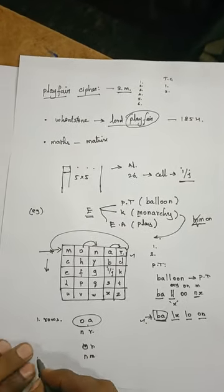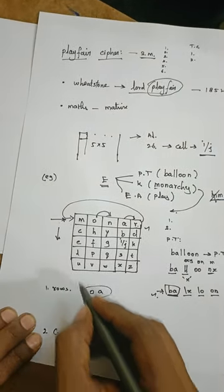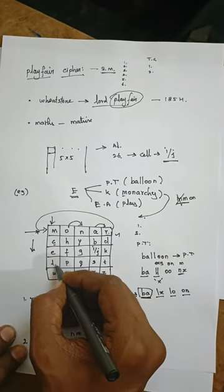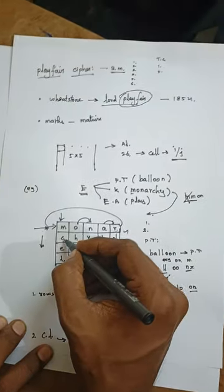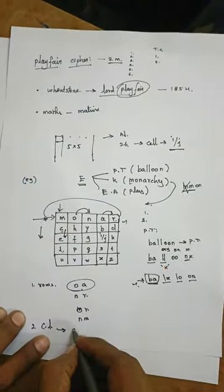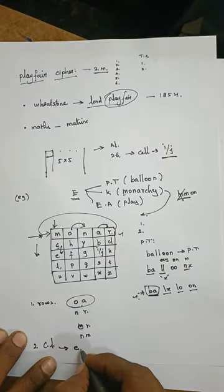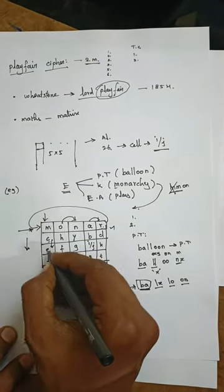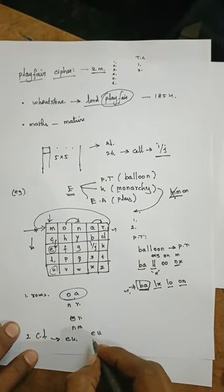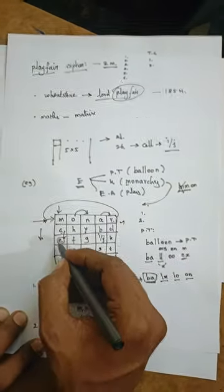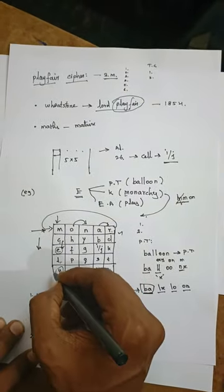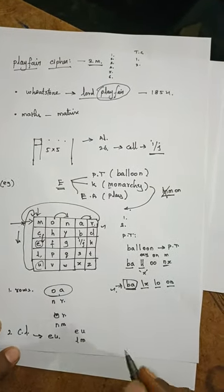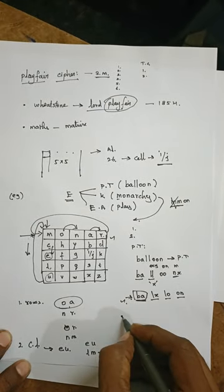Rule two: if the pair falls in the same column, take the letter one position further down in that column. For example, plaintext C and L would give ciphertext E and U respectively - one letter further down. If the letter is in the last row, rotate back to the first letter of the column. For example, if E and U are plaintext, the ciphertext would be L and M using wrap-around rotation.